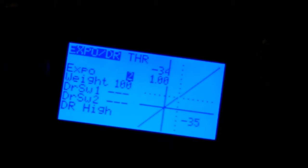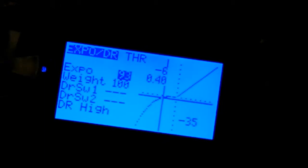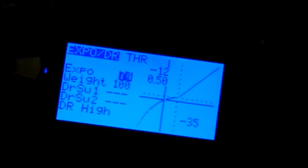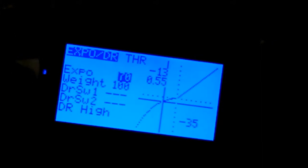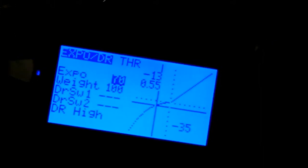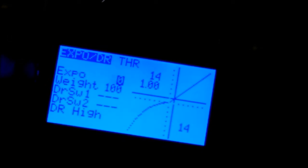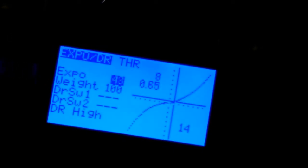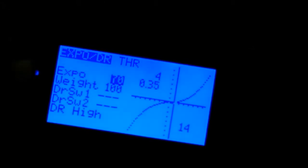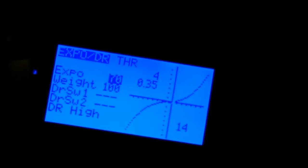And for me, I want to put my Expo actually around 70. I think that looks pretty good. And the weight, I'll just leave it like that. And then I'll move my Throttle Stick up a little bit to the upper half. And then I'll change the Expo there to 70.